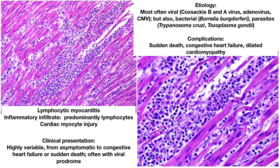Individuals with lymphocytic myocarditis can have a highly variable presentation, anywhere from asymptomatic to congestive heart failure to sudden death. Since it's usually viral in origin, they will often have a viral prodrome — fever, upper respiratory tract infection, muscle aches, and things like that. Complications include sudden death or congestive heart failure, and about 20% will go on to develop a dilated cardiomyopathy.